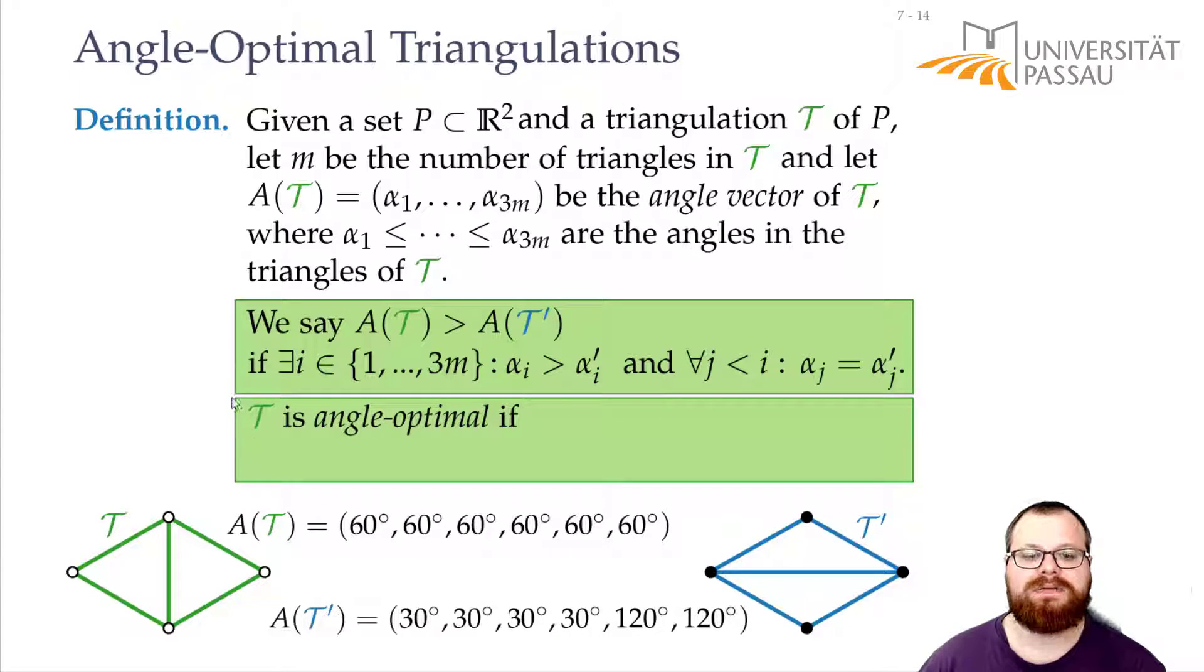So we have a way to compare two triangulations and figure out which one is the better one. But how do we find an angle optimal triangulation? We can still calculate a triangulation somehow, but then if I have one that's not optimal, somehow I have to move on and find a better one from that. And now we want to figure out how we can do that, how we can iterate over triangulations and keep on improving until we find the angle optimal one.